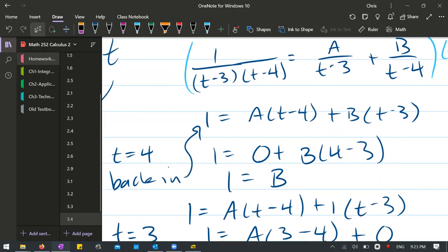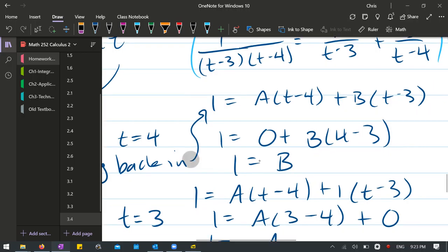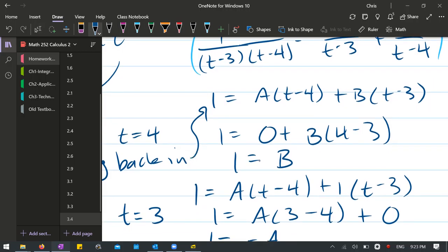In this particular equation, you don't have to plug back in because the other t value you're going to choose is three, and that's going to completely eliminate the B term. But in case you can't do that, sometimes it's smart to plug back in. We have B is one and I plug that value in right there.